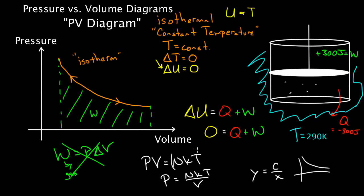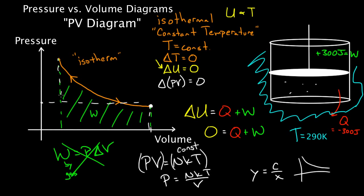One more important thing: because NkT is constant for an isothermal process, P times V is also not changing. So T doesn't change, internal energy U doesn't change, and P times V doesn't change either. That means if you take the pressure times the volume at any point along the isotherm, you'll get the same number. Any P times V value along this line is the same, because if it changed, the temperature would have to be changing and it wouldn't be an isotherm.